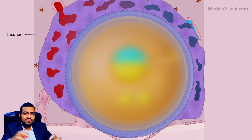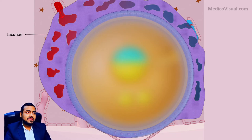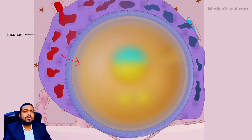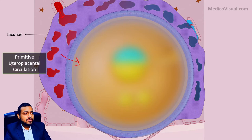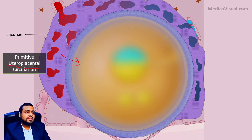Arteriolar blood bathes the lacunae network and ultimately drains into the maternal endometrial venule. A special type of circulation has been established — maternal blood is coming in, bathing the syncytiotrophoblast, giving nutrition to the embryo, and carrying away waste material, with less oxygenated blood flowing outward into the venule. This is what we call the formation of primitive uteroplacental circulation. There is no placenta formed yet, which is why it is primitive and not definitive uteroplacental circulation.